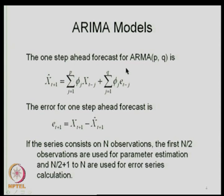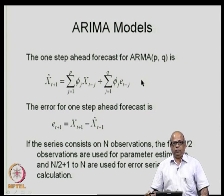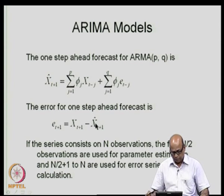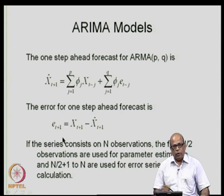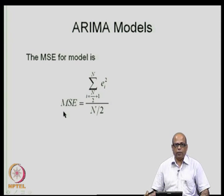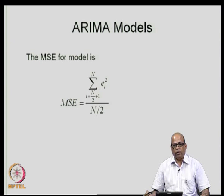The one-time-step-ahead forecast for an ARMA(p,q) model is written as: X̂_{t+1} = Σ(j=1 to p) φ_j X_{t-j+1} + Σ(j=1 to q) θ_j e_{t-j+1}, since the noise term has mean zero and vanishes. The error for the one-step-ahead forecast is e_{t+1} = X_{t+1} − X̂_{t+1}. The MSE is then the sum of squared errors divided by n/2, and we choose the model with minimum MSE.